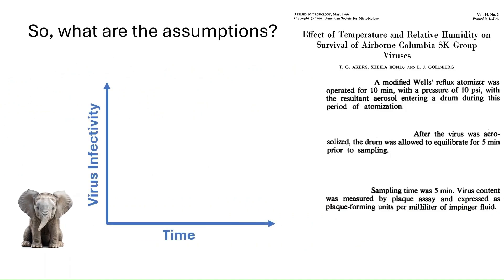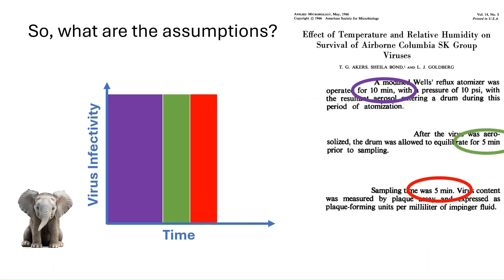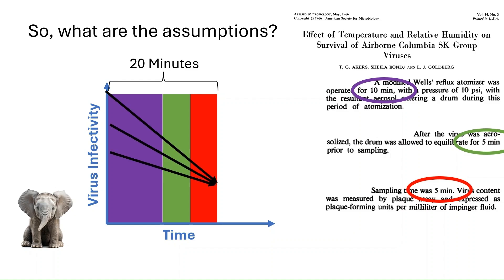So what are some of the assumptions that have been made? The aim is to measure the total viral decay rate. It takes 10 minutes to load the drum, 5 minutes to equilibrate, and another 5 minutes to sample — meaning there's 20 minutes where there's no information about what is happening to the virus. The user has no idea about the dynamics of the virus during this time.